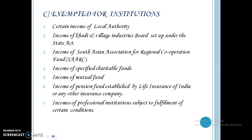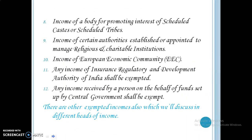The third case is incomes exempted for institutions. These include: certain incomes of local authority; income of Khadi and Village Industries Board set up under a state act; income of the South Asian Association for Regional Cooperation fund; income of specified charitable funds; income of mutual funds; income of pension funds established by Life Insurance Corporation of India or any other insurance company; income of professional institutions subject to fulfillment of certain conditions; incomes of a body for promoting the interest of scheduled castes or scheduled tribes; income of certain authorities established or appointed to manage religious or charitable institutions; income of the European Economic Community; any income of the Insurance Regulatory and Development Authority of India; and any income received by a person on behalf of funds set up by the central government. There are other exempted incomes also, which will be discussed under different heads of income.